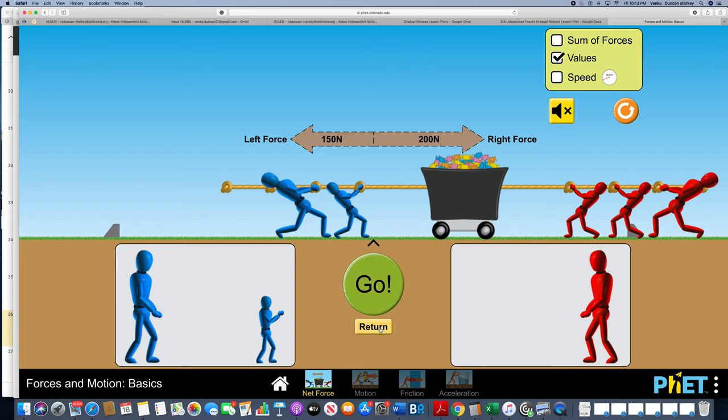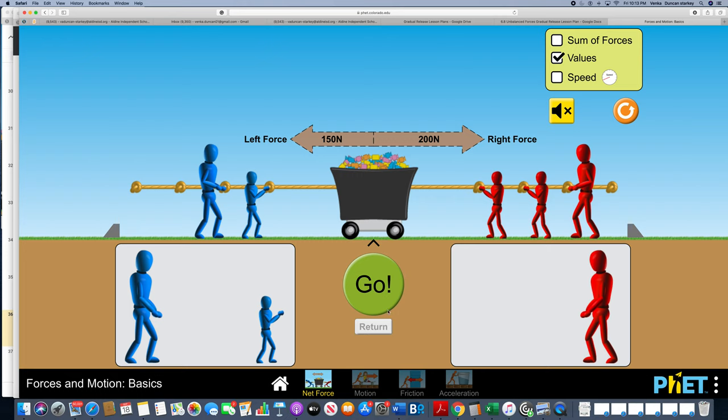Let's try that again. Now we're going to add an additional player onto this line to make the force even. Now there is 200 newtons of force on the left and 200 newtons of force on the right. What do you think will happen?